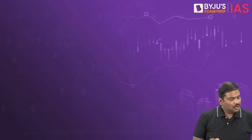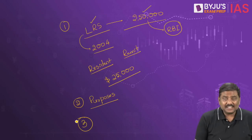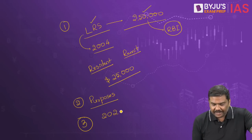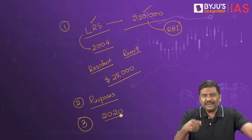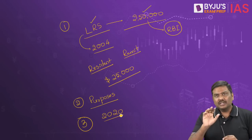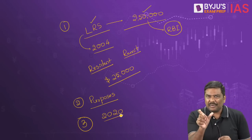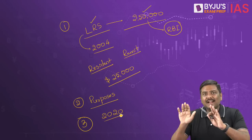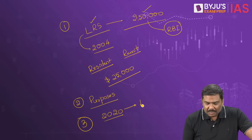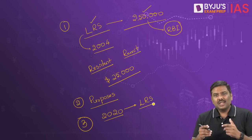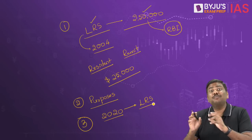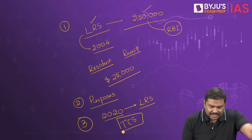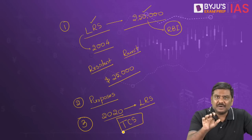Now, what is the recent change that has been announced? The first change was done by the government in the Budget for the year 2020-2021, when the Government of India introduced an important change by amending the Income Tax Act. Section 206C of the Income Tax Act now stated that under LRS, if you take out more than ₹7 lakh annually, Tax Collection at Source — TCS — of 5% would be applicable.